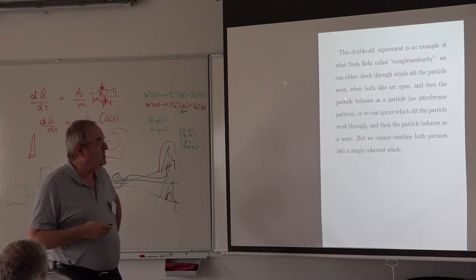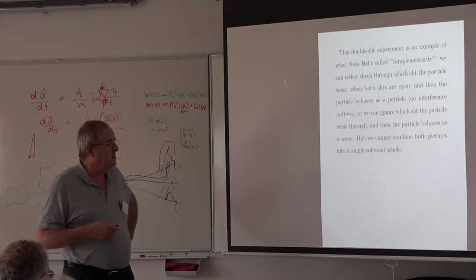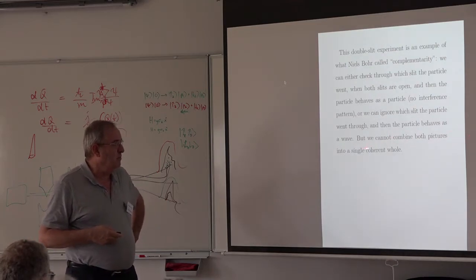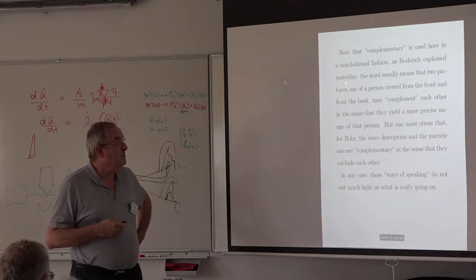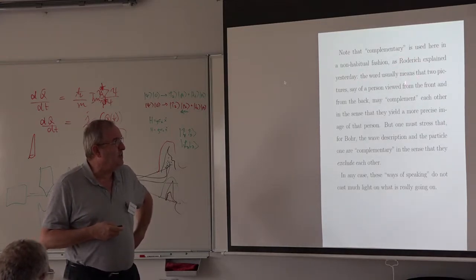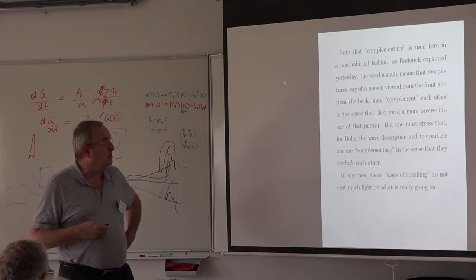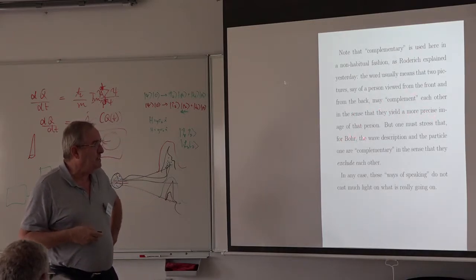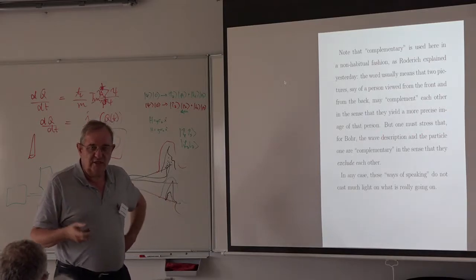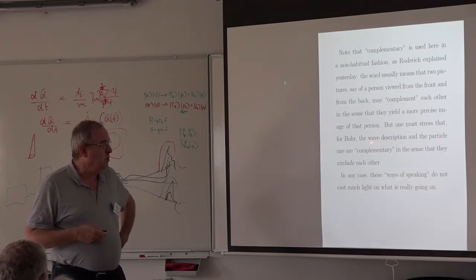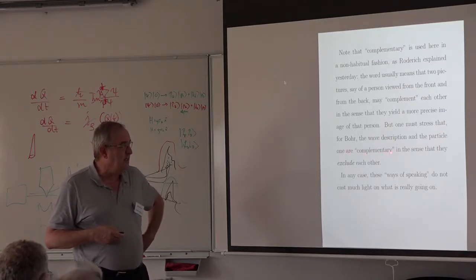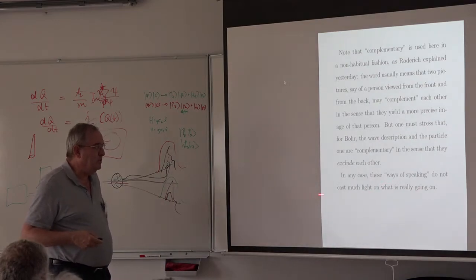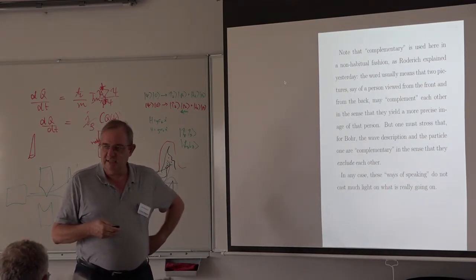You can either know through which slit the particle went — then it behaves like a particle, there is no interference — or you can ignore which slit the particle went through, then the particle behaves as a wave. But you cannot combine both pictures in a single coherent whole. Complementarity is used in a non-habitual fashion, as was explained yesterday, because the word usually means two pictures of a person seen from the front and from the back complement each other to give a more precise image. But for Bohr, the wave and particle descriptions are complementary in the sense that they exclude each other.